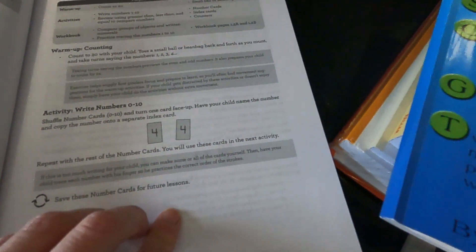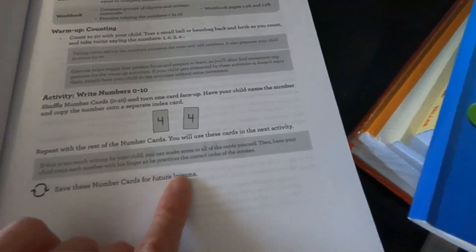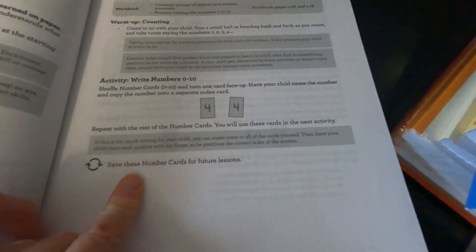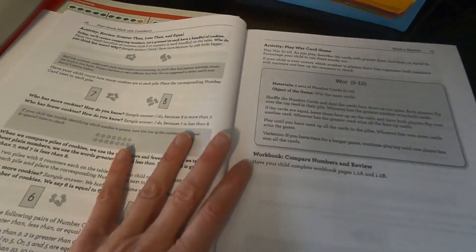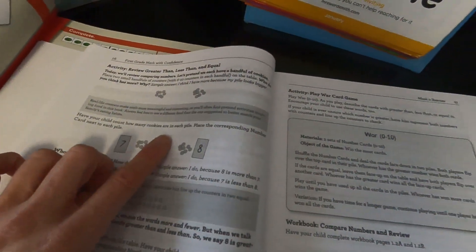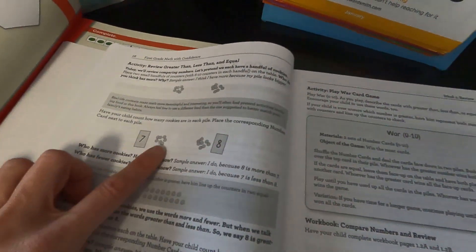All right, so shuffle cards, turn one card face up, have your child name the number and copy the number on a separate index card. All right, and then repeat with the rest of the number cards. And you will use these cards in the next activity, so save these number cards for future reference. So if it is too much writing for your child, which I like that they consider—because even at grade one it was too much for my son—then you have the child trace the number with his finger just so that he can understand the strokes of it.